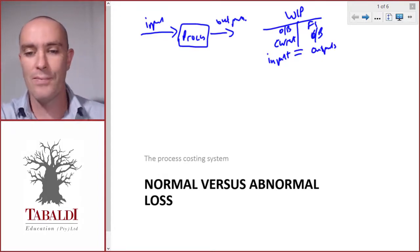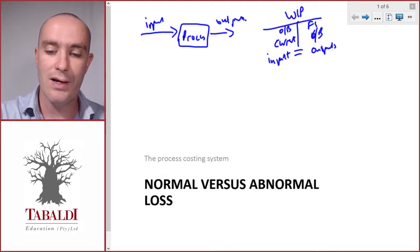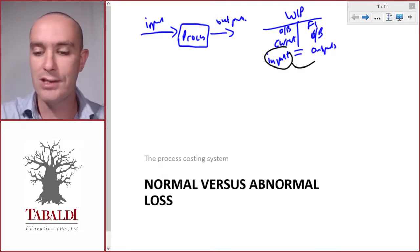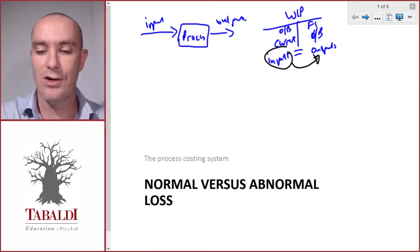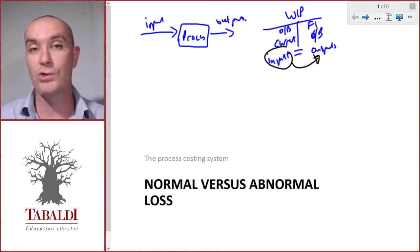That's in a perfect world. But in reality, losses take place. There's two categories of losses. Loss is when all the inputs do not reach the stage of the finished goods or the closing work in process. Somewhere along the line, it goes missing. Let's look at the two types of losses.